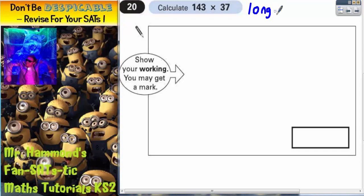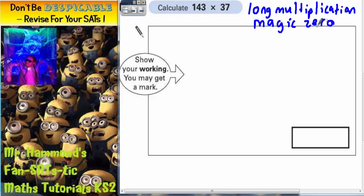Now some people may refer to this as being long multiplication and that's correct because anytime you're multiplying by a large number like 37 we can call it long multiplication. Now we're going to use a method that we're going to refer to as the magic zero column method. We still do need to set the sum up in columns so it's 143 times by 37.